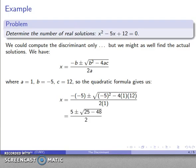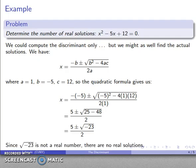That's 5 plus or minus square root of 25 minus 48. And after all the dust settles, 5 plus or minus square root of, uh-oh, negative 23 is our square root. And since square root of negative 23 is not a real number, there are no real solutions.